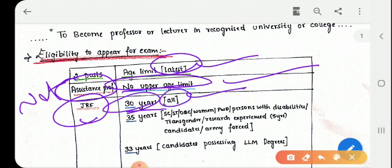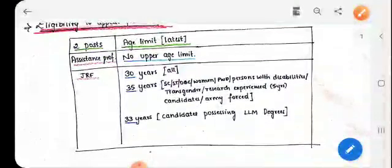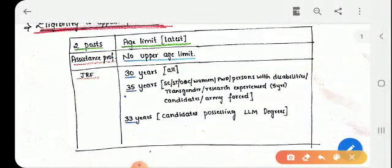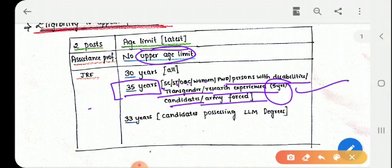Yes, according to the latest data there is no upper age limit, you can attempt NET exam at any age and can become assistant professor. For JRF there is an age limit. Okay, so 30 years for all usually, this is for everyone, and also for some categories it is less. For example, 35 years is the upper age limit for SC,